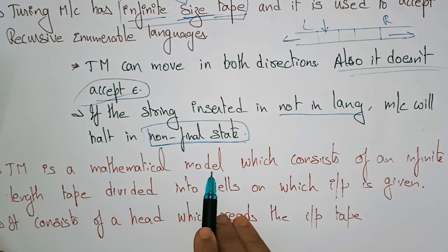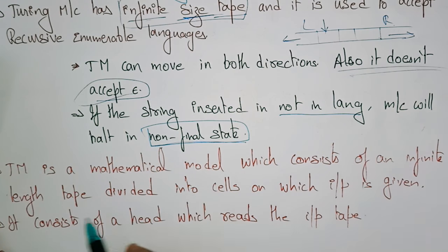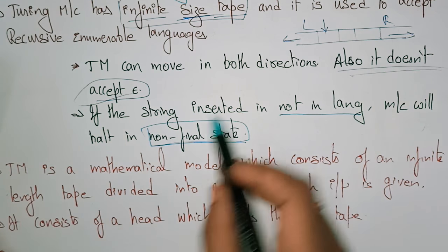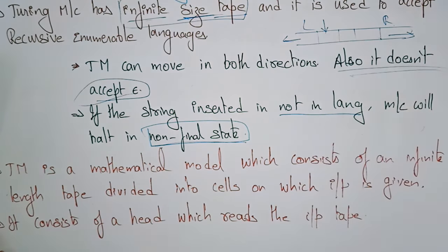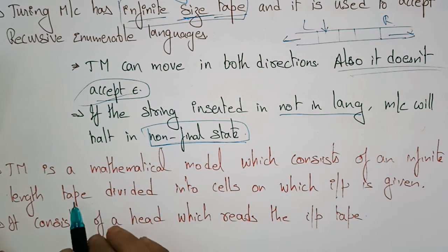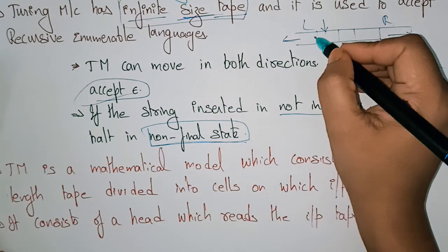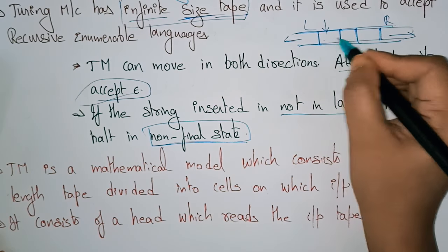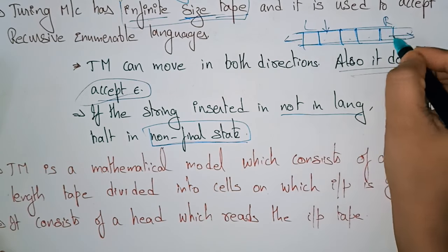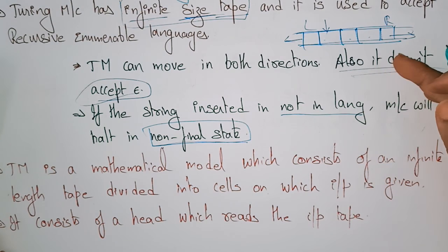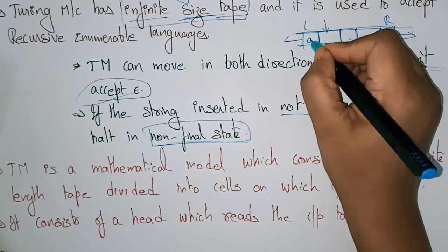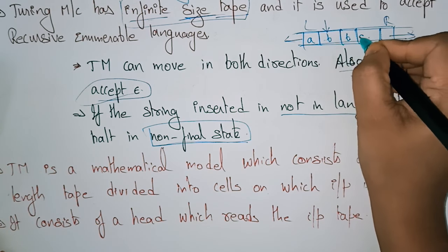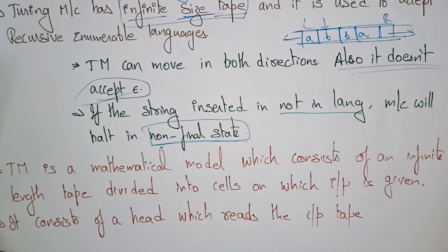The Turing Machine is a mathematical model which consists of an infinite length tape. This length tape is not constant — it is infinite and is divided into cells. The tape is divided into cells on which input is given. Here we are giving the input A, B, B — like that, any string.